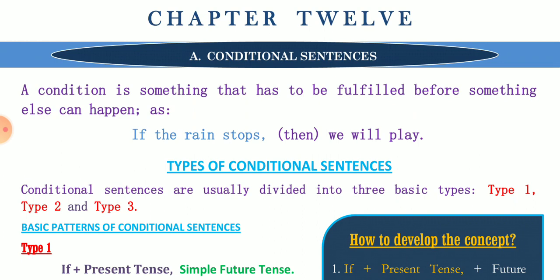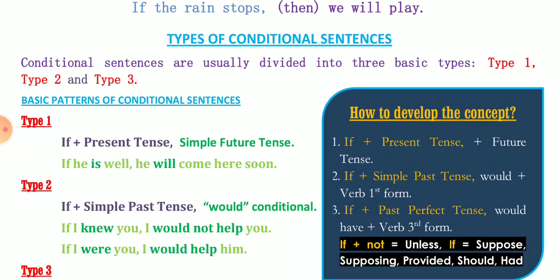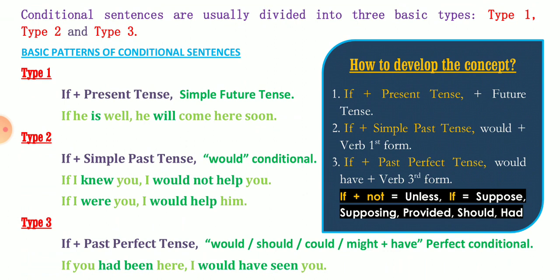Conditional sentences are usually divided into three basic types. In grammatical terms we call them Type 1, Type 2, and Type 3. To understand them, remember three things: if plus present tense, the second sentence uses 'will' plus verb first form; if plus past tense, the second sentence uses 'would/should/might' plus verb first form; if plus past perfect, the second uses 'would/should/could/might have' plus verb third form. Also, 'if not' equals 'unless', and 'if' can be replaced by 'suppose', 'supposing', 'provided', 'should', or 'had' in different contexts.